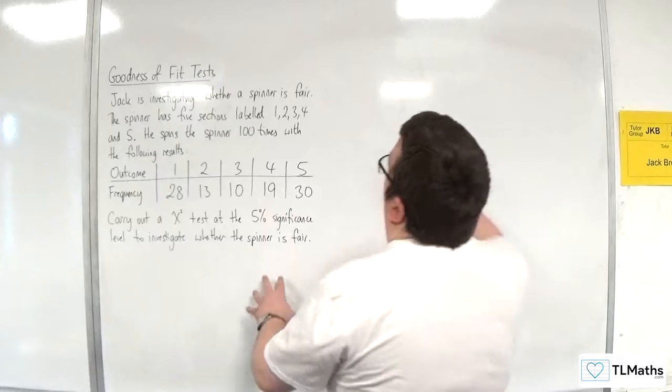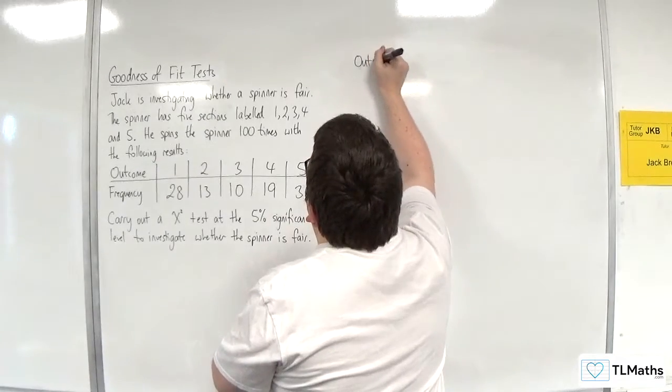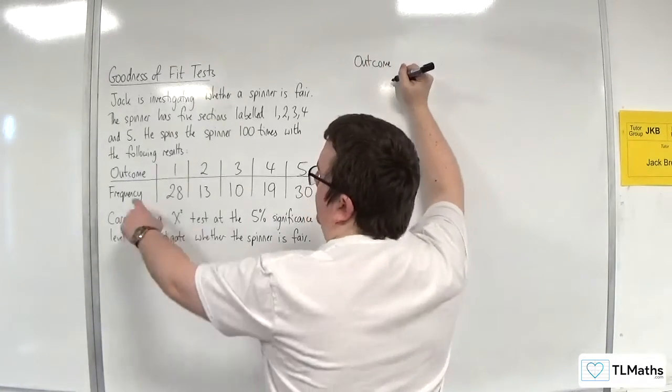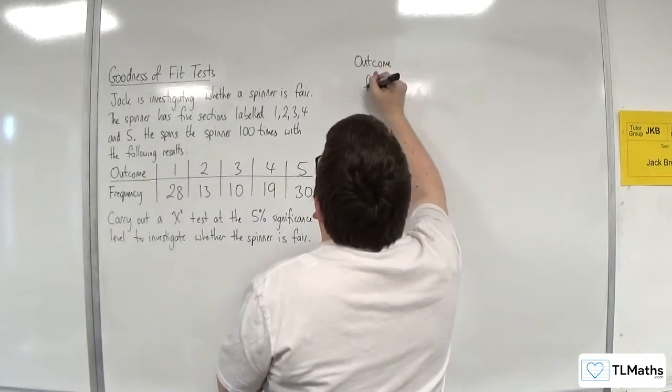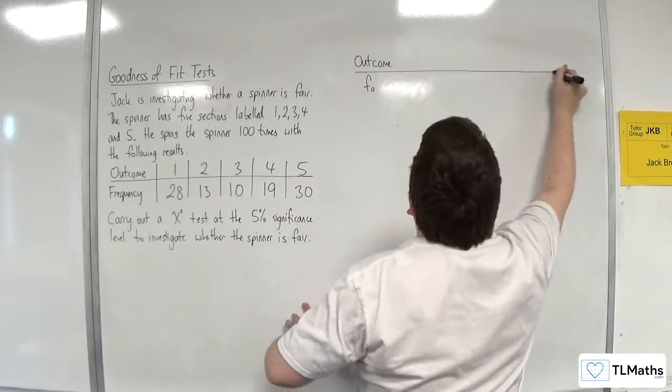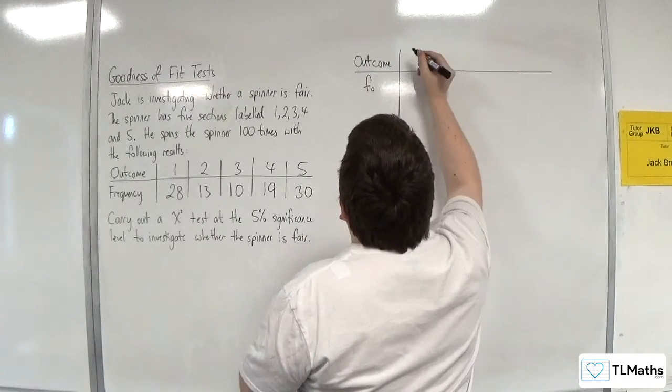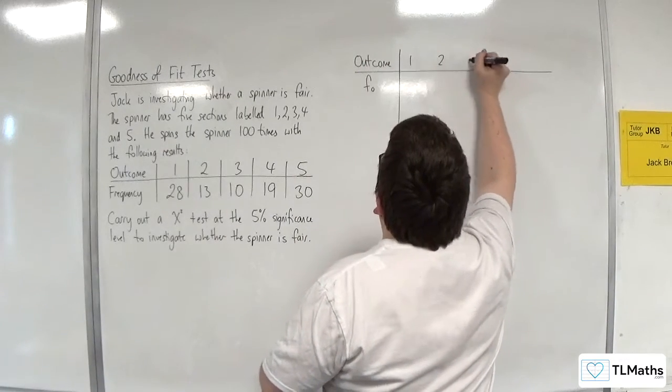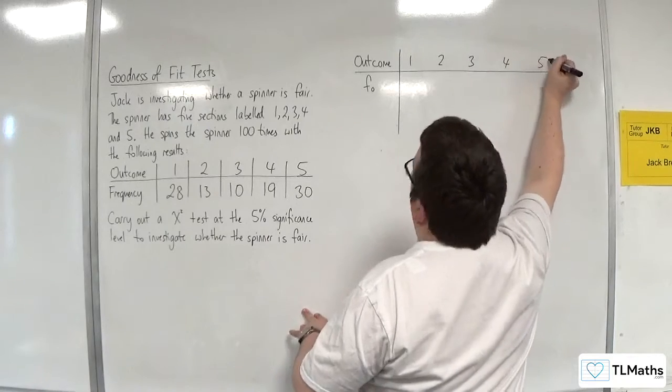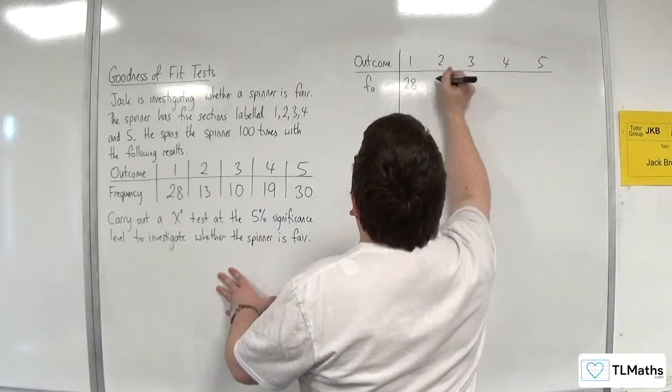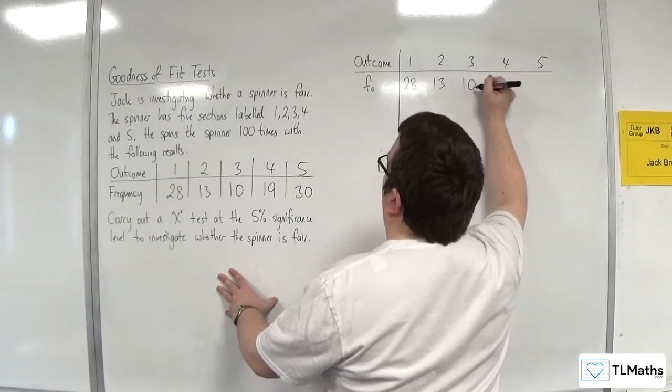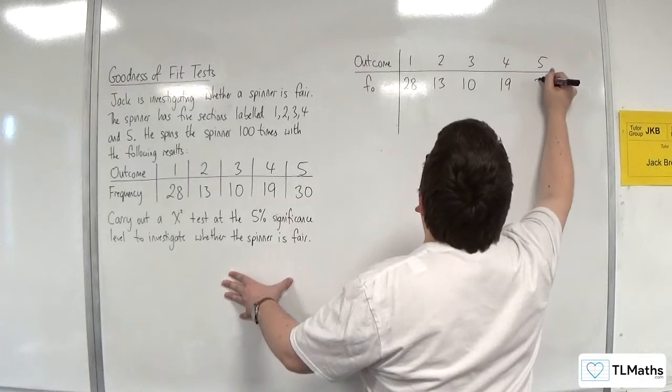We've got our outcomes, and these are the observed frequencies. Let's label them FO. So we've got 1, 2, 3, 4, 5 with frequencies 28, 13, 10, 19, 30.